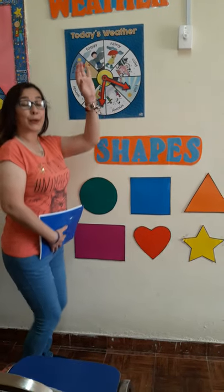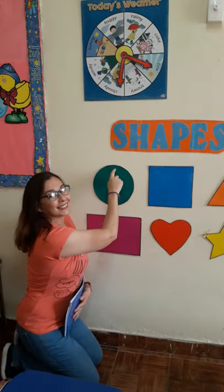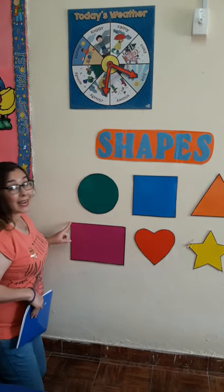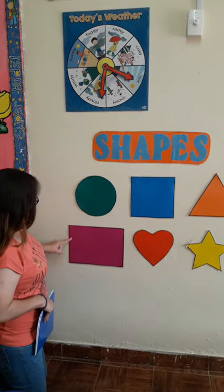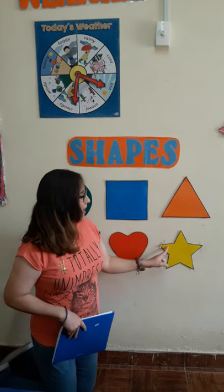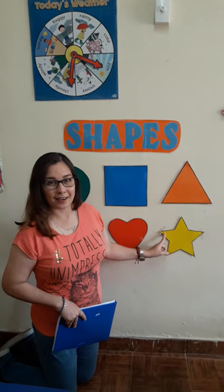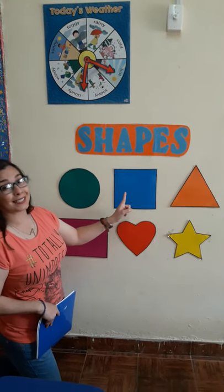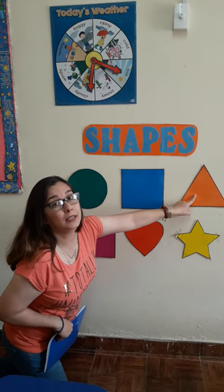Now let's see the shapes. What shape is this? Heart. And star. Again: circle, square, triangle, rectangle, heart, and star. Nice.